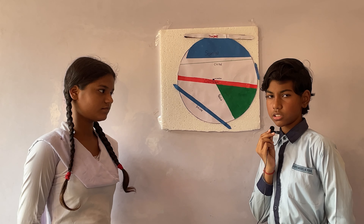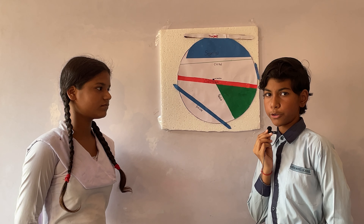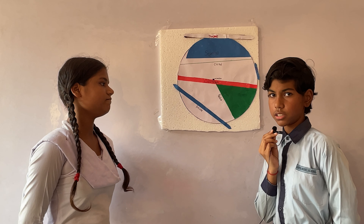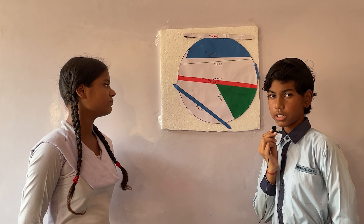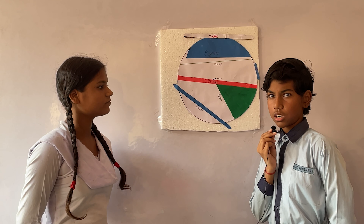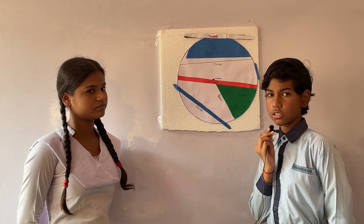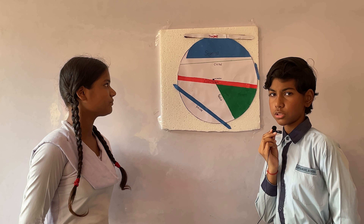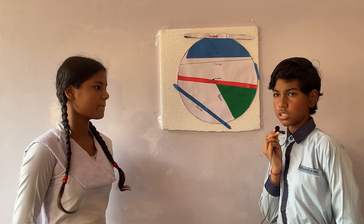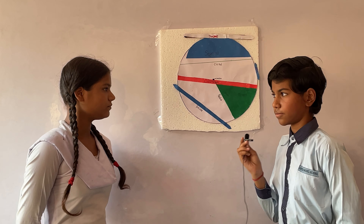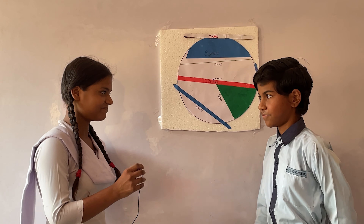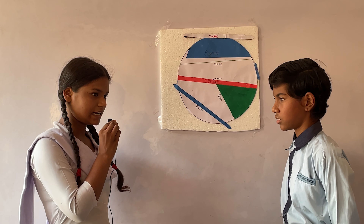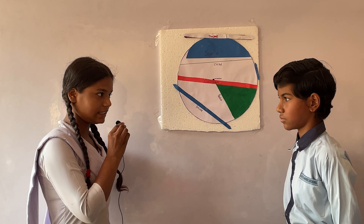Definition of secant: a straight line which intersects a circle into two parts is called a secant. Definition of diameter: diameter is the largest chord of a circle which passes through the center of the circle.